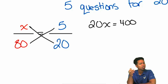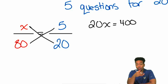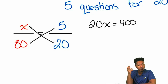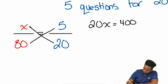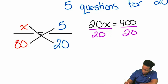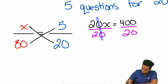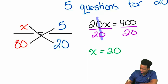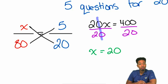What are we going to do to both sides? That's right — we're going to divide both sides by 20. So we divide both sides by 20, allowing us to cancel the 20 out, leaving us with a final answer of x equals 20. Because 400 divided by 20 will be 20.